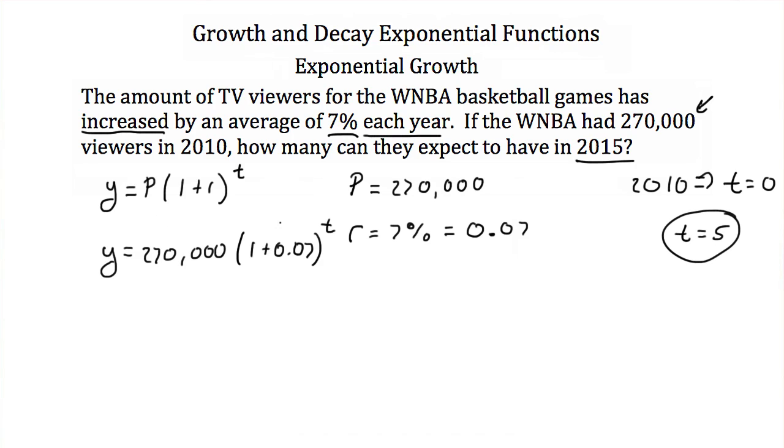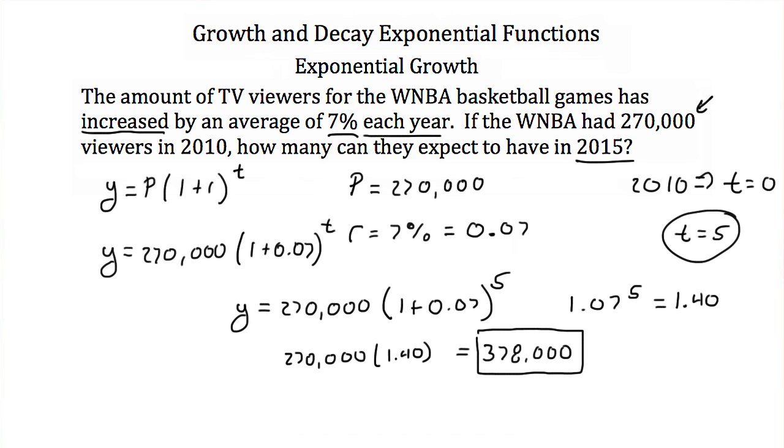So if I plug that in for t, I'll get y equals 270,000 times 1 plus 0.07 raised to the fifth power. Now 1 plus 0.07 is 1.07, and if we raise that to the fifth power, that's approximately 1.40. So if we take 270,000, we multiply it by 1.40, we're going to get 378,000 viewers. So the WNBA can expect to have 378,000 viewers in 2015.